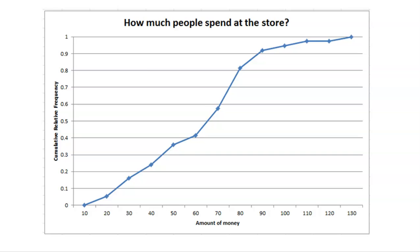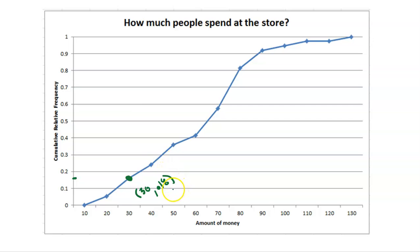Every one of these dots represents the percentile for the value beneath it. For example, let's look at this dot right here. This dot has an x-value of 30 and a y-value of roughly 0.18. The x-value is the amount of money somebody spent at the grocery store, and the y-value is its percentile. So this means that 18% of people spent $30 or less.